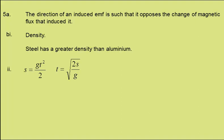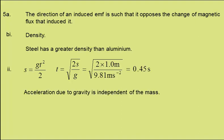So rearranging, we get the time as the square root of 2 times the distance over the acceleration due to gravity. Putting in the values, this comes out at 0.45 seconds. The acceleration due to gravity is independent of the mass.